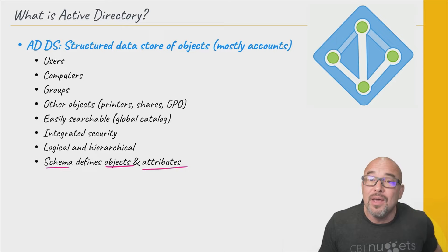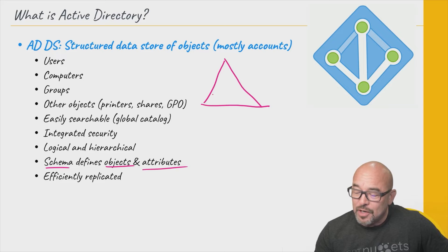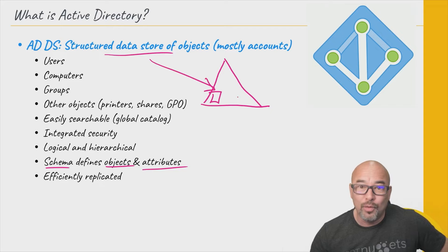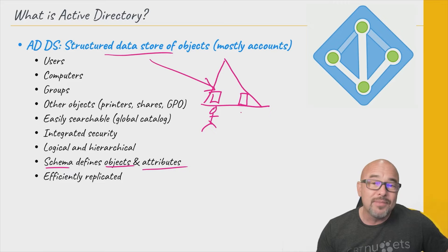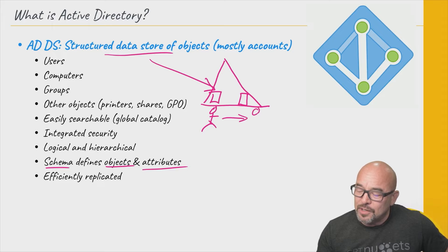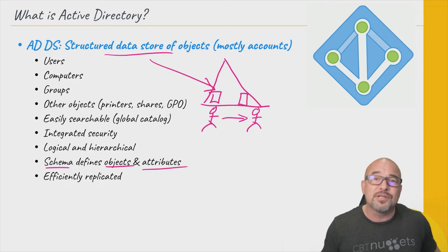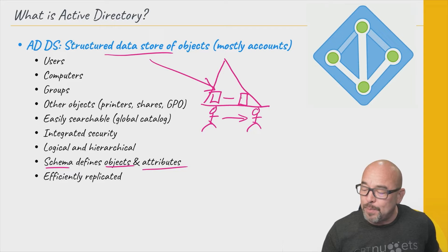All of this is effectively replicated. In most organizations, you're going to have a domain with a domain controller, and the domain controller is what stores your Active Directory Domain Services. Normally you have more than one for failover, load balancing, and other reasons. A copy of your users and everything else involved in Active Directory would be copied over to the other domain controller — it's an exact copy. They are peer domain controllers; one is not superior to the other in any way.